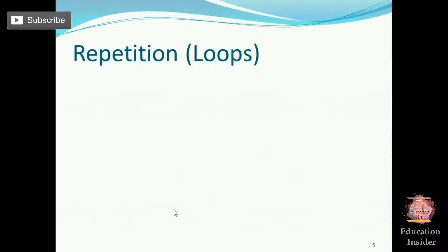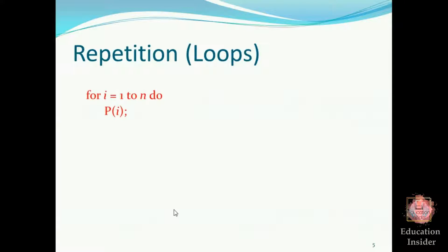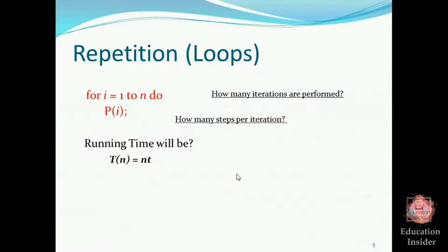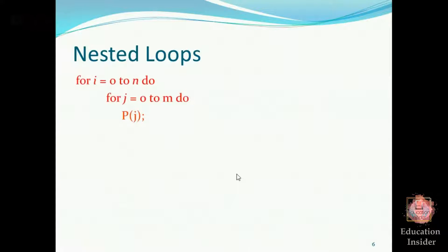What is repetition? Repetition is loops — for loops, do-while loops, while loops. For example, this for loop is going to run n times, so the operation p(i) will also run n times. Any loop is distinguished by two things: first, how many iterations will be performed, and second, how many steps will be performed per iteration. The running time will be n × t, where t is the time each operation takes for execution.